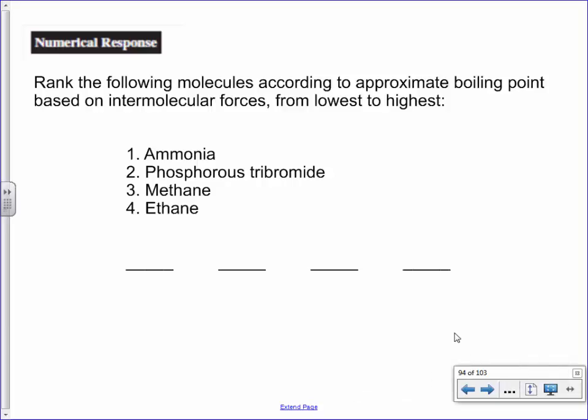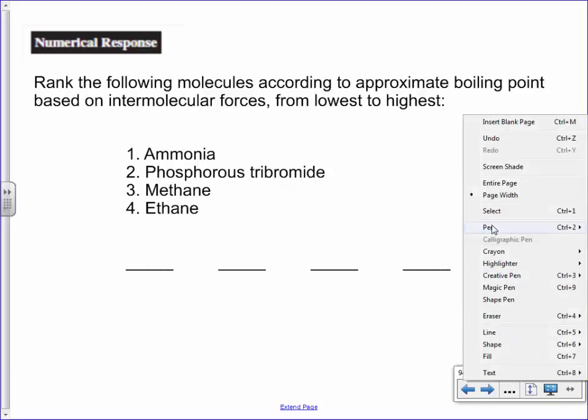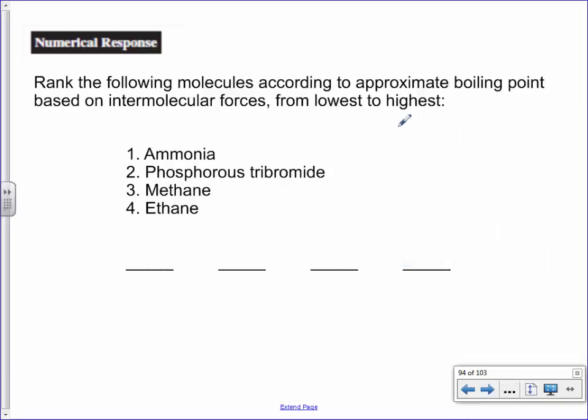Alright, so last day I gave you guys a question where basically what you need to do is rank these things in boiling points. Before we can even do that though, we should probably draw these molecules because our goal is to figure out what sort of forces exist between them. Do you guys remember what ammonia is? Good, NH3. So hopefully you're getting a little bit quicker at drawing NH3, but it would look something like this as a Lewis dot diagram. That's the Lewis dot diagram for ammonia.